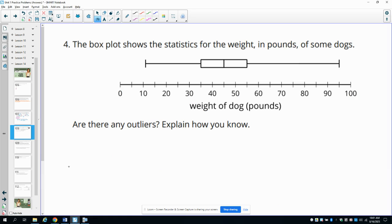Number four: The box plot shows the statistics for weight in pounds of some dogs. Are there any outliers in this data? Again for the outliers, we need to calculate the IQR, which is the distance from Q1 to Q3. So 55 minus 35 would give us 20 for that IQR.